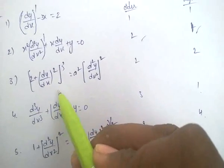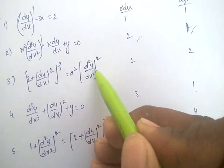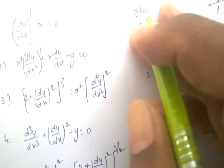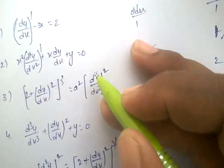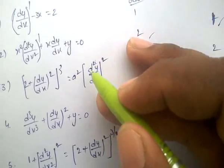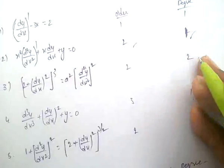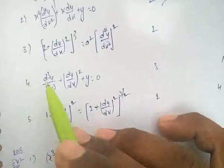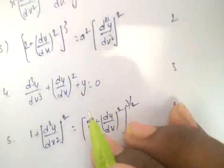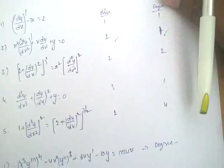Next equation: the highest derivative is d²y/dx² — not dy/dx. So the order is 2. The power of the highest derivative is 2, so order is 2, degree is 2. In the next equation, the highest derivative is d³y/dx³. So order is 3 and degree is 1.